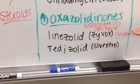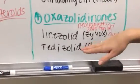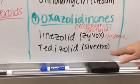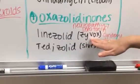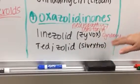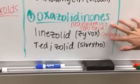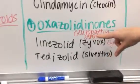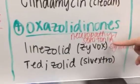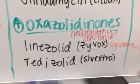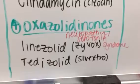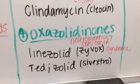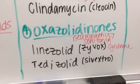Last but not least, also at the 50S subunit, we have linezolid and tedizolid. Linezolid's brand name is Zyvox. The main side effect profile includes neuropathy and serotonin syndrome, because these drugs also act as monoamine oxidase inhibitors.